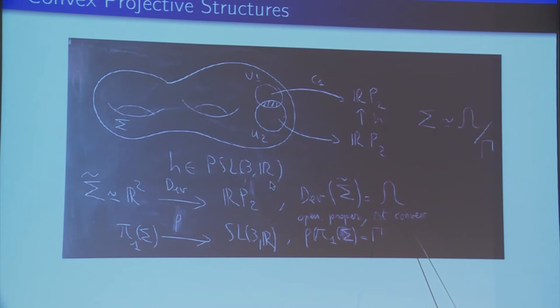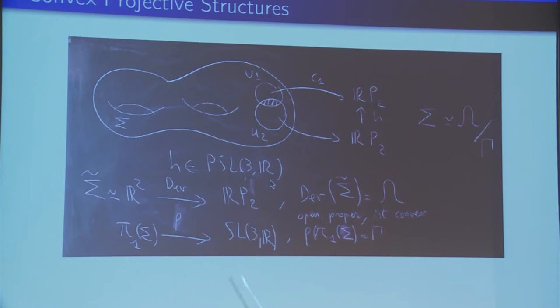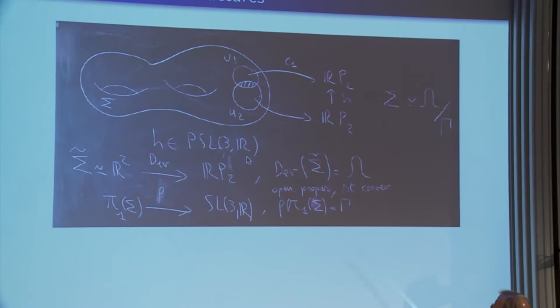When you go to the universal cover, then you have the developing map. The image of the universal cover surface is in that case a strictly convex proper open set, omega. You have seen one this morning for Hilbert geometry. And in the same time, what you get very interesting is that you get a representation of the fundamental group of the surface into SL3R. Not SL2R as usually. I have representations.